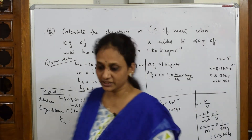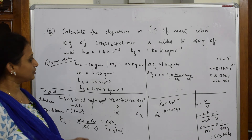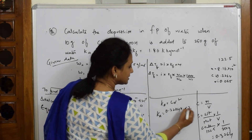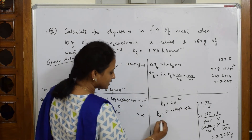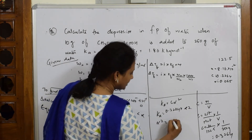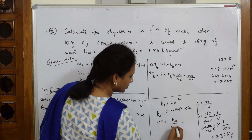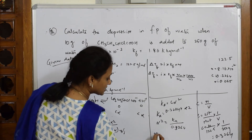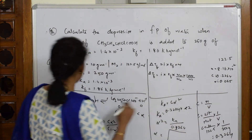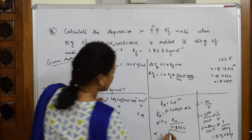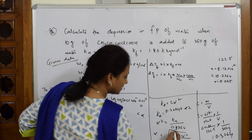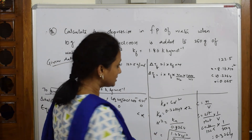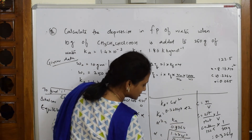Solving for α: α² = Ka / c = (1.4 × 10⁻³) / 0.3264, so α = √(1.4 × 10⁻³ / 0.3264) = 0.065. The degree of dissociation α = 0.065.